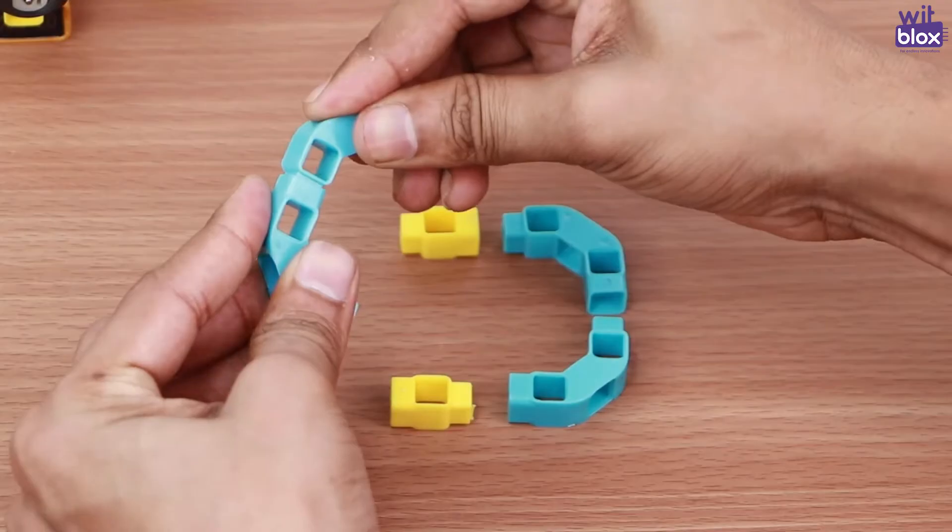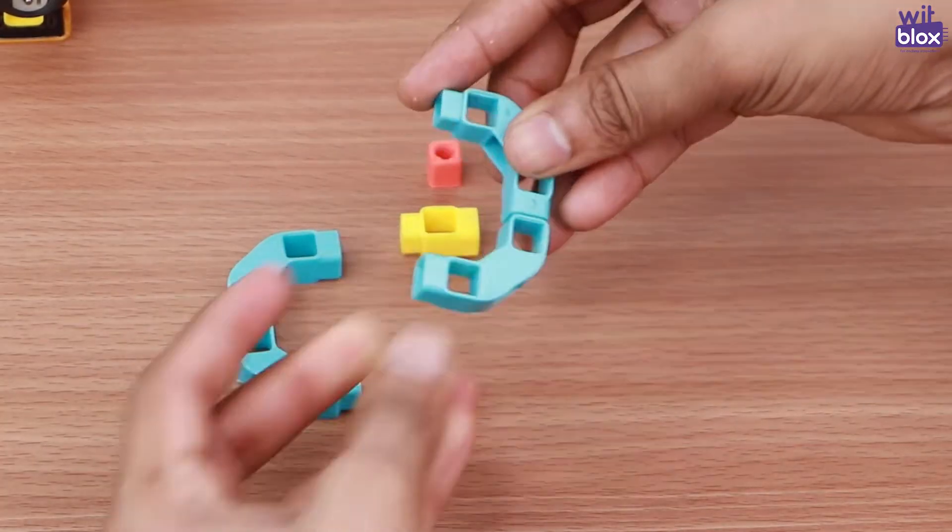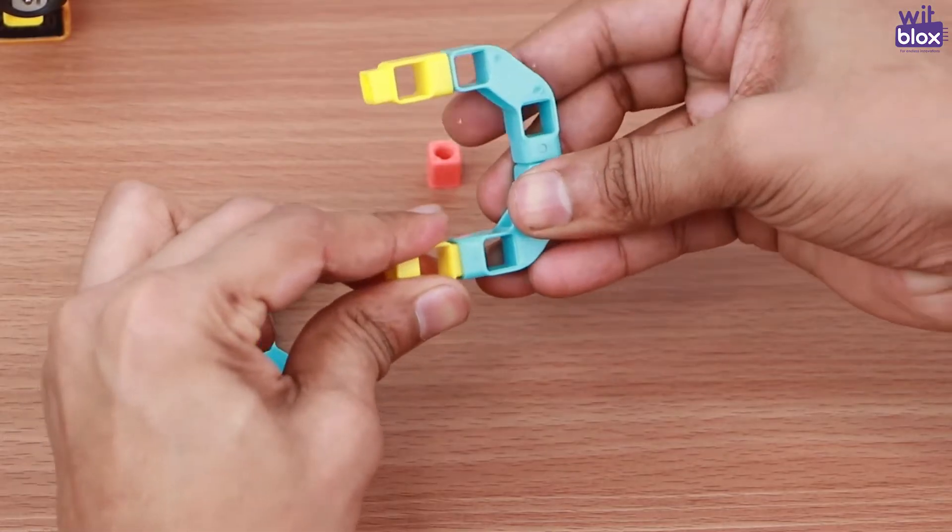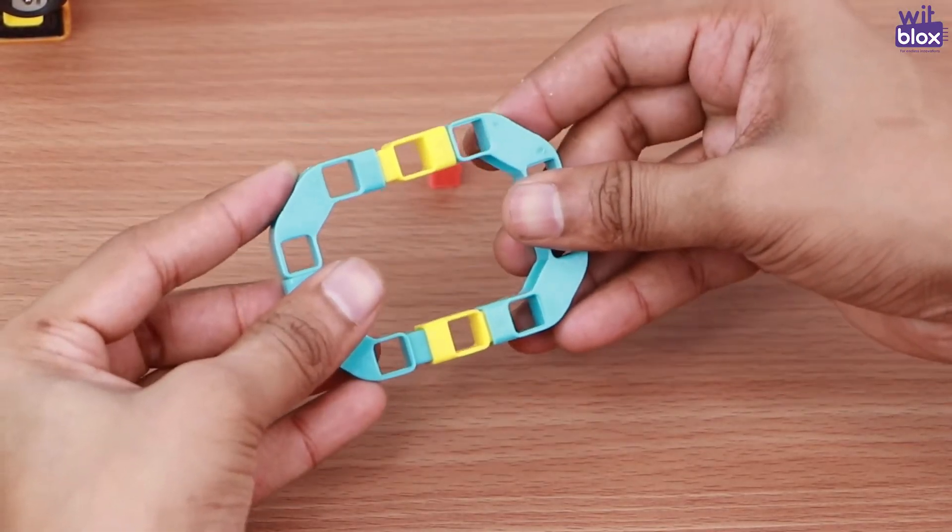Now let me make legs for the robot to hop. We will use 4 90-degree 3-hole elbow joints and 2 single-hole beams to create an oval structure like this.